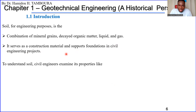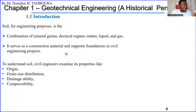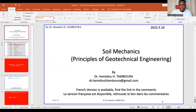To understand soil, civil engineers need to examine soil properties such as the origin of the soil itself, grain size distribution, drainage ability — how easy it is for soil to drain water — compressibility, shear strength (which is very important in geotechnical engineering), and load bearing capacity. We need to know all this information when going into a civil engineering project.